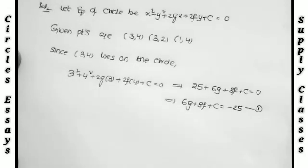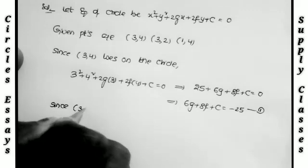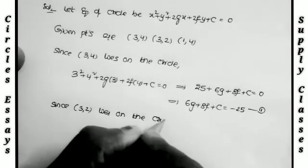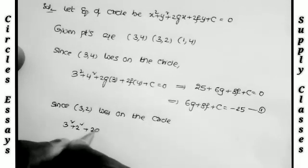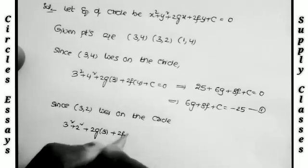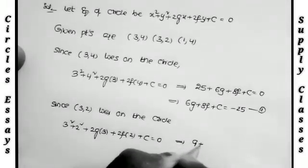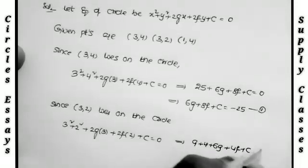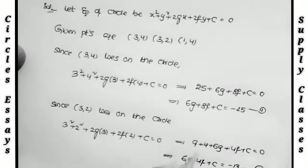Now replacing the second point in the circle equation. Since (3, 2) lies on the circle, replacing this point: 3² + 2² + 2G(3) + 2F(2) + C = 0, which gives 9 + 4 + 6G + 4F + C = 0, which implies 6G + 4F + C = −13. This is Equation 2.